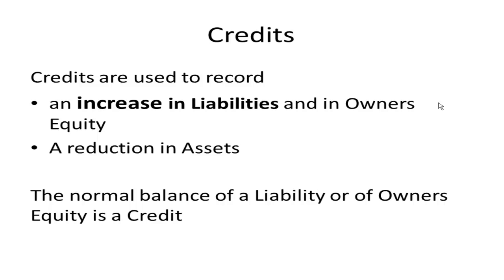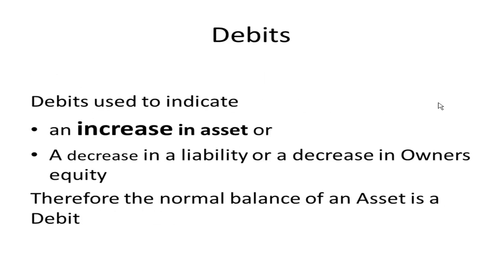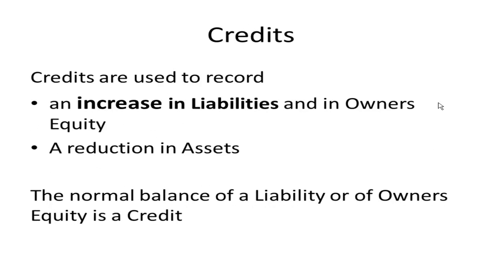Credits are used to record an increase in liabilities and an increase in owner's equity. They're also used to record a reduction in assets. Therefore, the normal balance of a liability is a credit, and the normal balance of owner's equity is a credit.